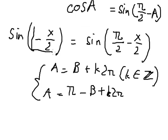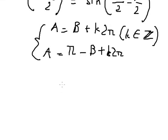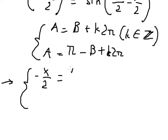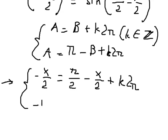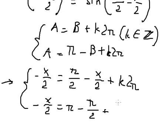Now A is about negative S over 2, and B is about π over 2 minus S over 2. So we have negative S over 2 equals to π over 2 minus S over 2 plus Kπ.